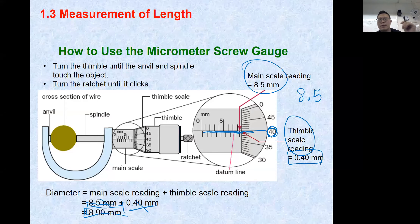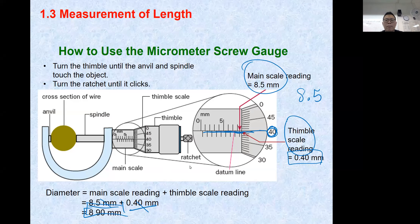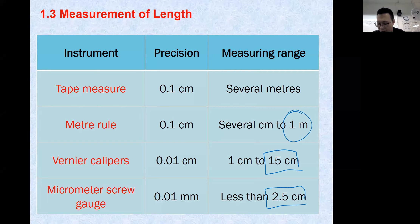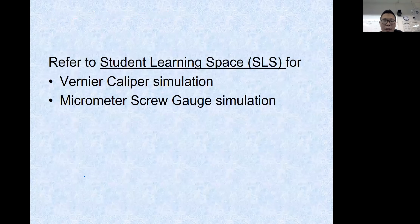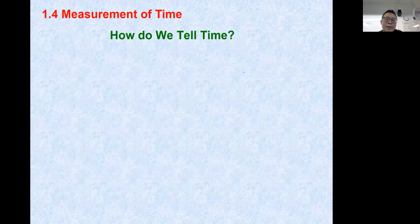Take note of the range of each instrument: the meter rule measures up to about one meter; the vernier caliper has a maximum of around 15 cm; and the micrometer screw gauge has a maximum of about 2.5 cm. For anything less than 2 cm, although you can use the vernier caliper, it is more advisable to use the micrometer screw gauge because it is more accurate.